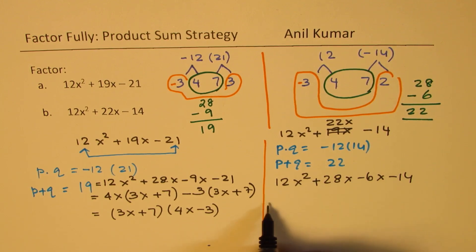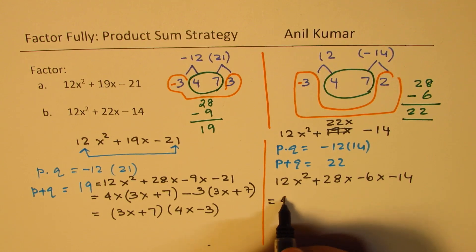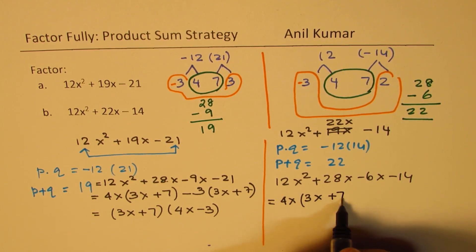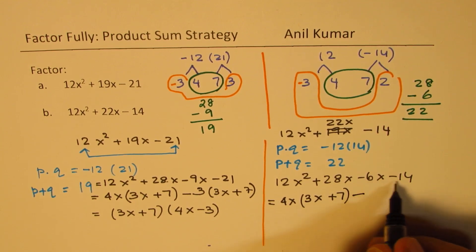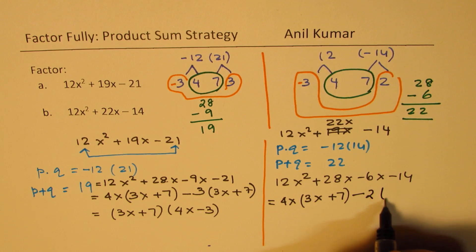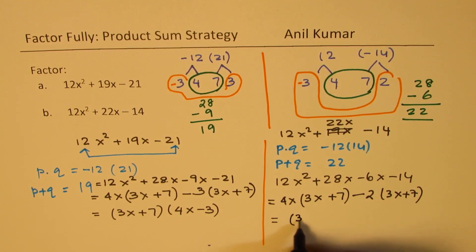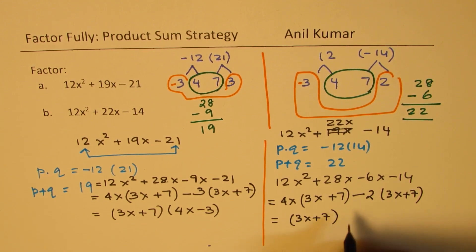Now what is common between these two? We can take 4 common here, so we get 4x common. And here we get 3x + 7. In this case, we have 2 common, so we get 3x + 7 here also.